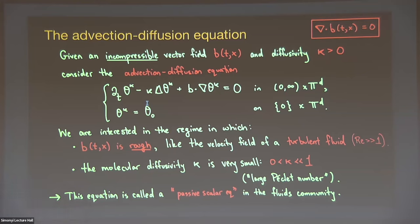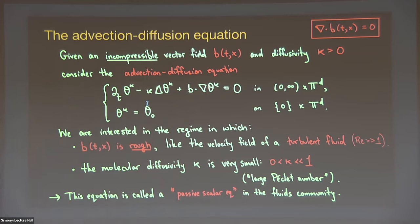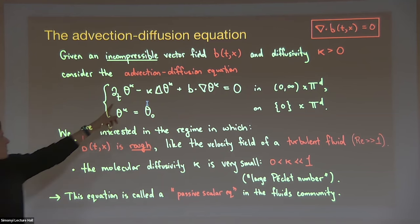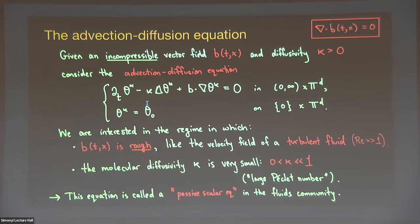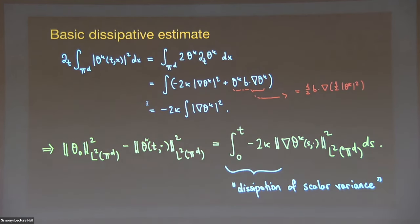It's passive because in an ordinary fluid equation the vector field b would be related to the solution theta, but here they're totally decoupled — the scalar theta satisfies the equation without being coupled to the vector field. It's scalar because ordinarily in a fluid equation you'd have a vector, like in Navier-Stokes, and here I just have a scalar. Both of these simplifications make things easier.